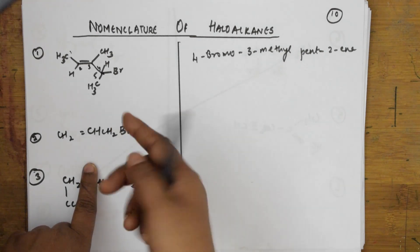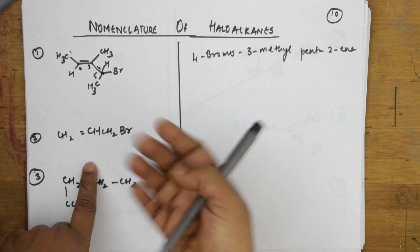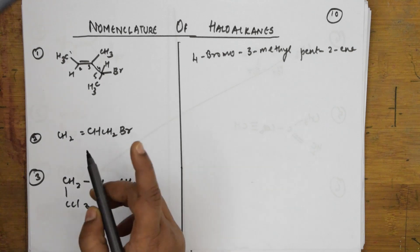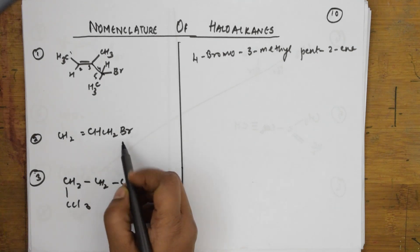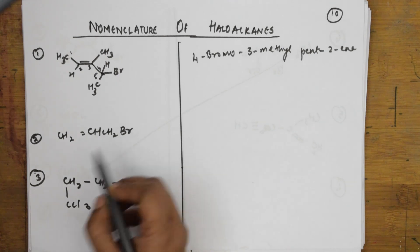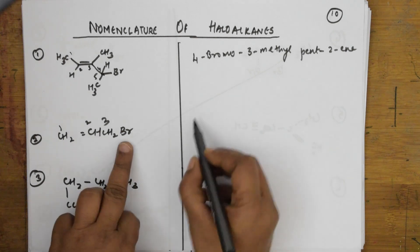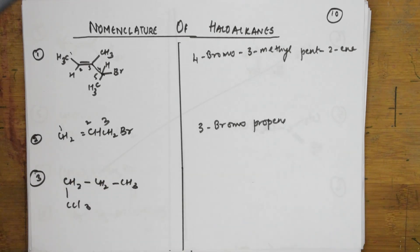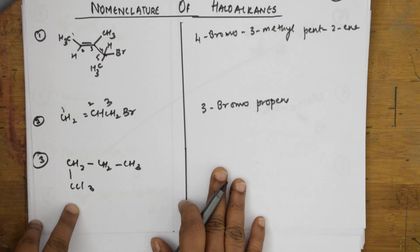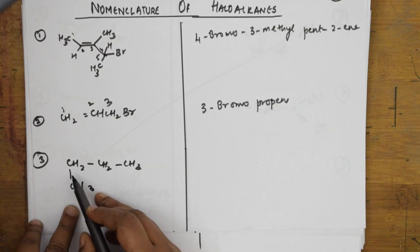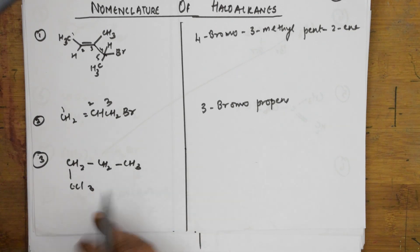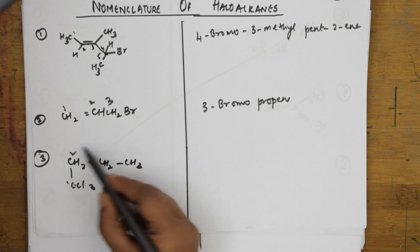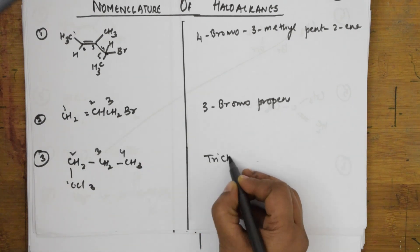The common name would be alkyl bromide, but for the IUPAC name, the halogen is taken as a substituent. Numbering one, two, three — according to alphabetical order, this is 3-bromopropene. For the next compound, you have three chlorine groups on one carbon — that's a substituent. The parent chain is one, two, three, four — that's butane — so we name it trichlorobutane.